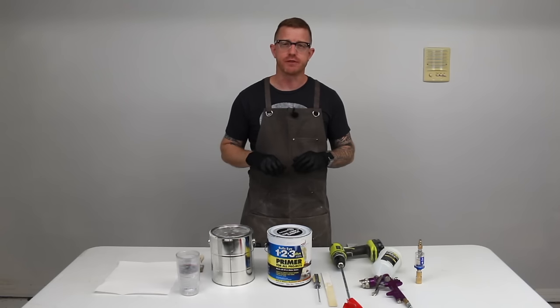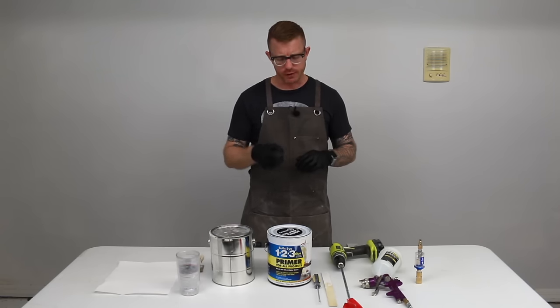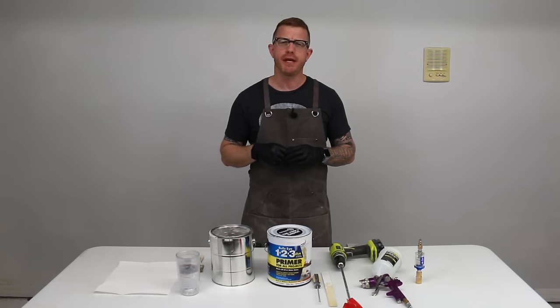Hi, I'm Brian House and this is Modern DIY. Today we're going to talk about thinning down water-based paints and primers to spray through an HVLP gun.